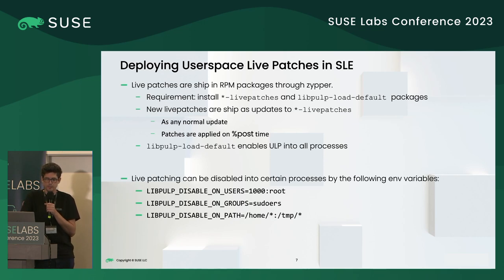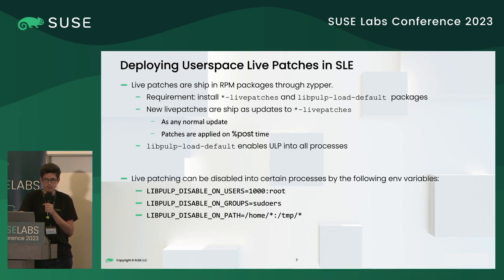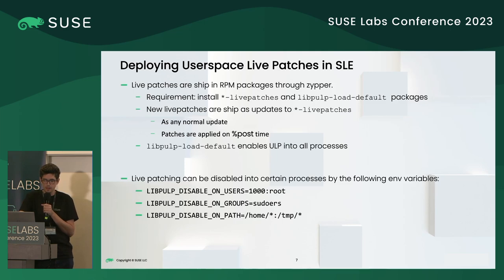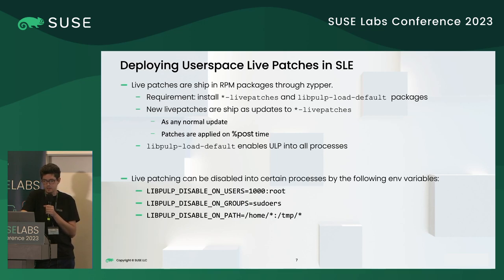The libpulp-load-default package enables userspace livepatching into all processes. If you need to disable livepatches for certain processes, you can use environment variables. There are three environment variables currently supported: you can disable livepatching by user UID (e.g., UID equals 1000), by group membership (e.g., the sudoers group), or by application path (e.g., anything placed in the home or tmp folder).